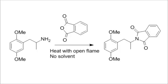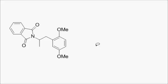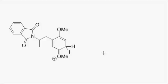Shulgin made DOI by protecting 2,5-DMA as a phthalimide, heating a mixture of phthalic anhydride with the neat amine, presumably because the free amine wouldn't tolerate the conditions of the next iodination reaction. He used iodine monochloride, an interhalogen which is technically a solid at room temperature, but will still sublimate while you're weighing it and give you an interesting sensation in your mucous membranes.